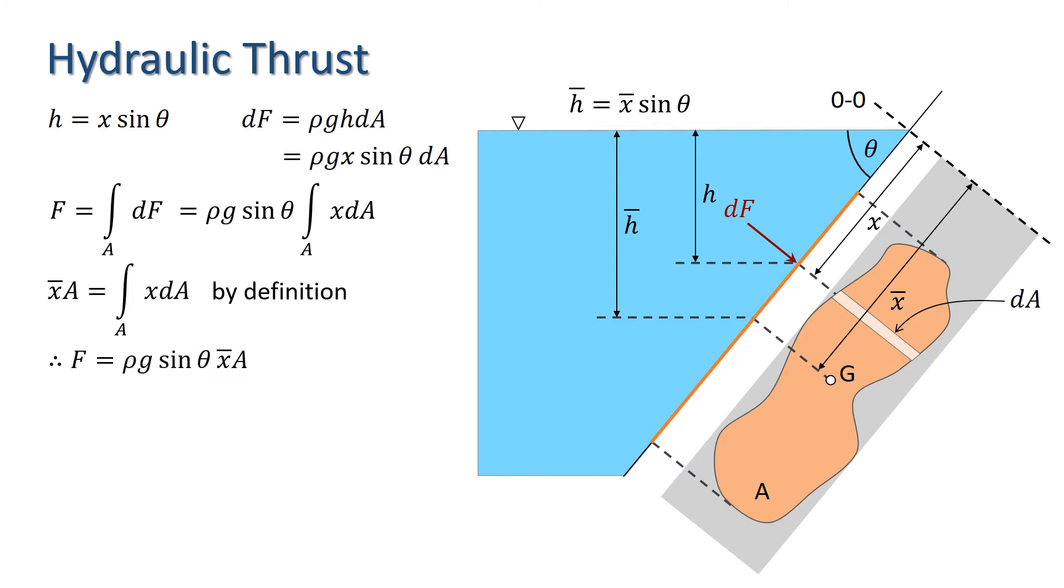Thus, F can be written rho G sine theta times X bar times A. We also know that sine theta times X bar is the pressure head at G, which we denoted H bar. Thus, we have rho G H bar times A.